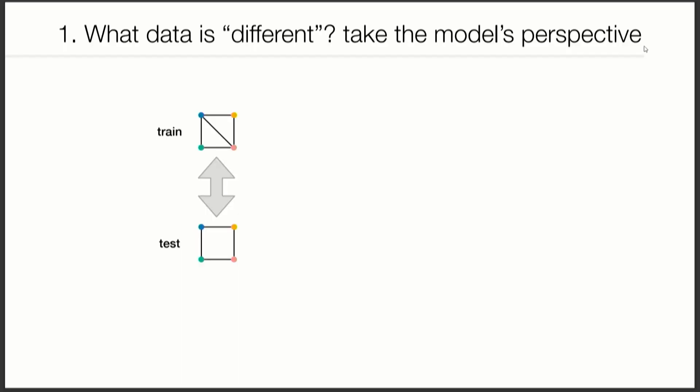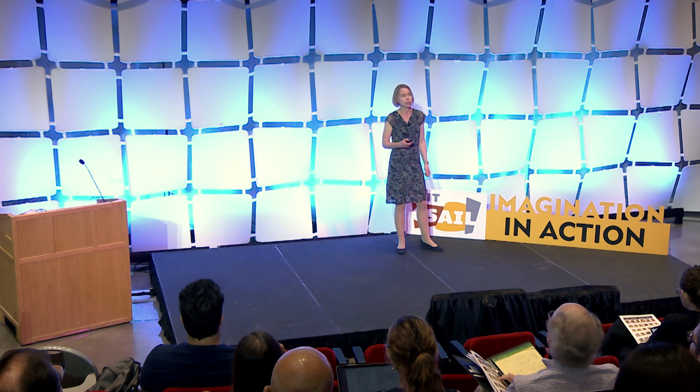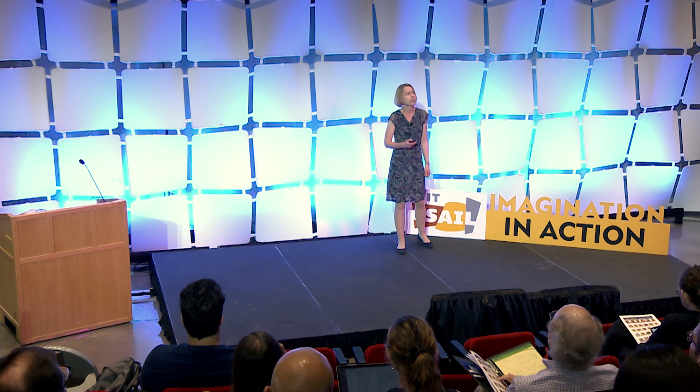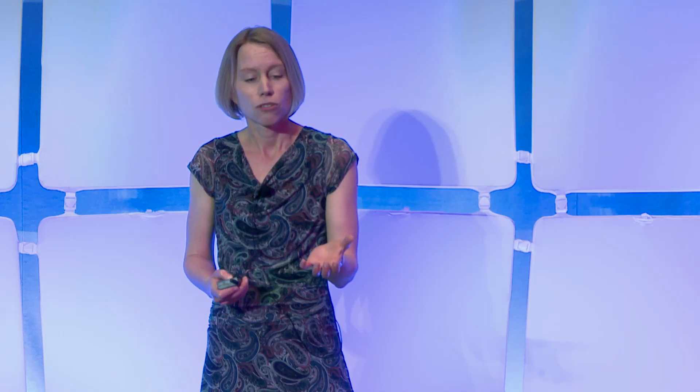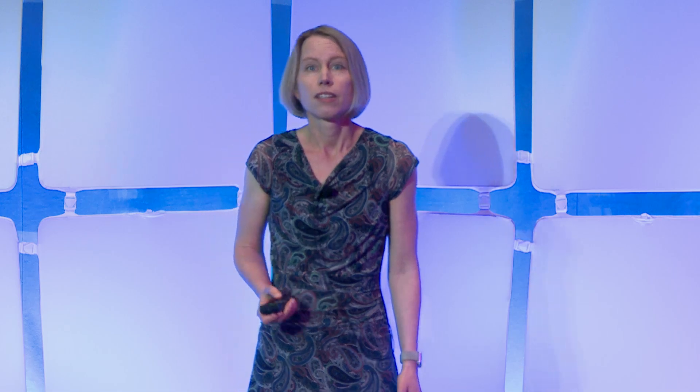Let's first look at the data. We want to understand: given a new dataset, would the model actually work on it? We have to compare it to the training data — which means comparing graphs. What we found is it may be very useful to look at your data the way the neural network sees it: as a collection of local structures. Using that, we can predict whether a shift in the input will change the model's output a lot or only a little, telling us whether to rely on it.